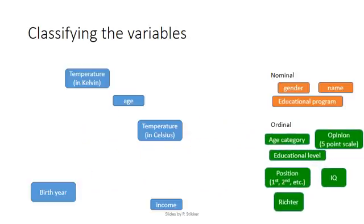From the remaining ones, the now highlighted in purple, temperature and birth year will be considered interval, while the blue ones, temperature in Kelvin, age, and income will be considered ratio. I'll try to explain why these are categorized like this on the next few slides.